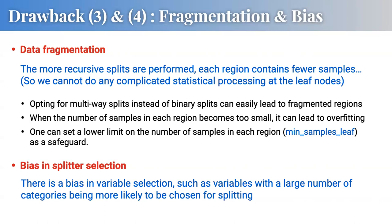Decision trees have two other problems: data fragmentation and bias in feature selection. For data fragmentation, a decision tree repeatedly splits a given sample into two groups. If we repeat this recursion too much, the final area includes very small samples — like two or three — which is not statistically reliable. We can safeguard this with options like setting a minimum sample per leaf, but it's an essential problem of the decision tree algorithm.